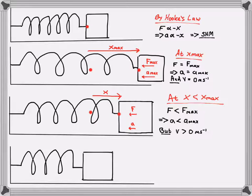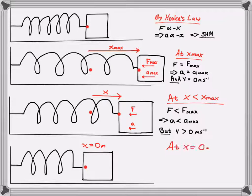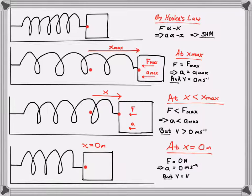As the mass travels back to its equilibrium position, its displacement is zero. At x equals zero, the force is zero — there's no force acting on it. Therefore the acceleration must be zero. But velocity is at a maximum.